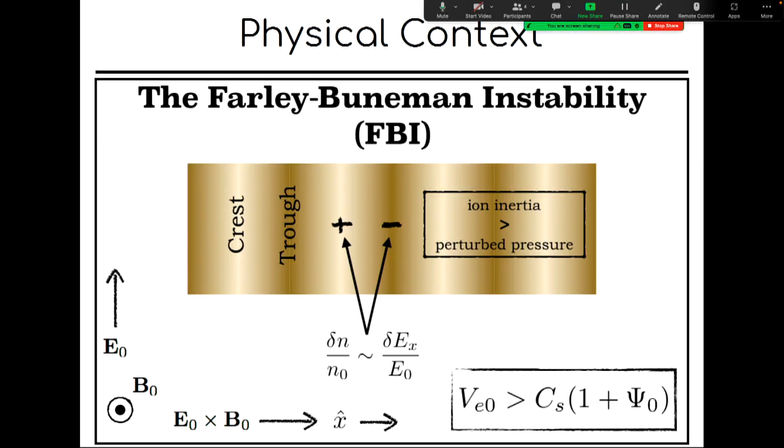And so in this frame there's a charge separation between the electrons and the ions that creates an electric field in phase with this wave. The polarization electric field that comes from this charge separation has the same sign. It's positive where delta N over N is positive and negative where delta N over N is negative in this picture. Let me point out that the magnetic field is out of the page in this picture.